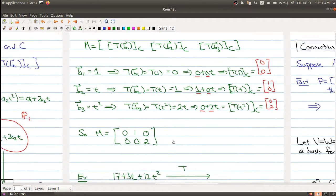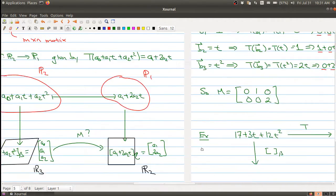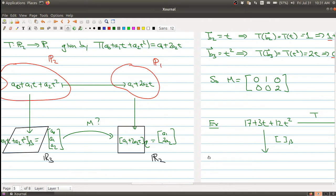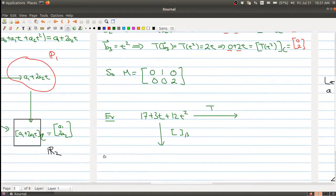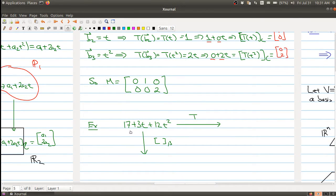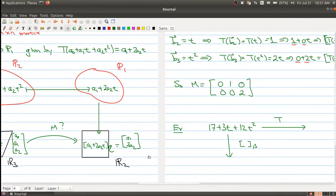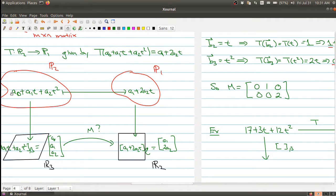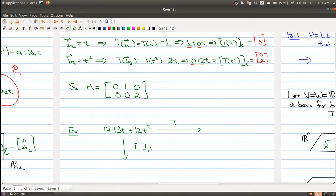So I think it would help to see what's happening with respect to this picture if I do a very specific example so you can track what's going on. So let's say I start with 17 + 3t + 2t². So I'm starting with something over here. This is a very simple calculus problem. This gets sent to 3 + 24t.